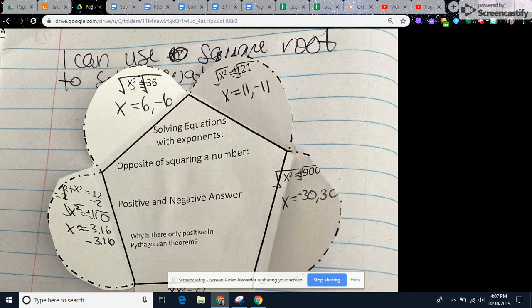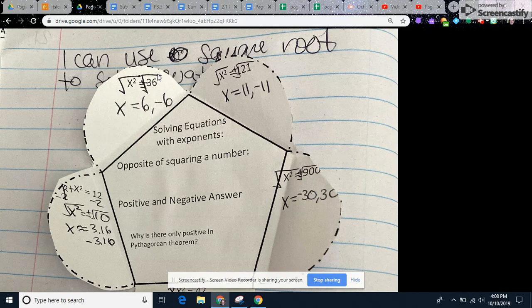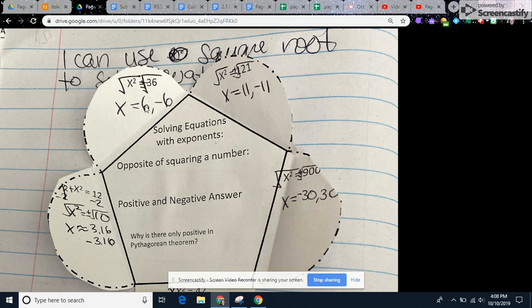And so how you're going to change x squared to make it x, the opposite of squaring a number is to take the square root of the number. So when you take the square root of x squared, it gives you x. Well, whatever you do to one side, you've got to do to the other. So you're going to take the square root of 36. Now most people will get this first answer because what times itself gives you 36? Six.